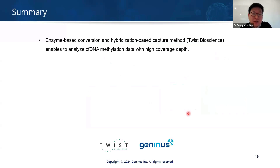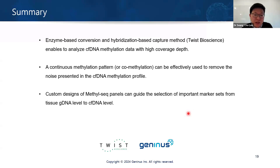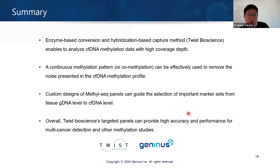Today's summary: enzyme-based conversion and hybridization-based capture methods enable analysis of cell-free DNA methylation data with high coverage depth. Co-methylation patterns can effectively remove noise present in cell-free DNA methylation profiles. Custom designs of methylation-seq panels can guide selection of important marker sets from tissue genomic DNA to the cell-free DNA level. Smaller panels are advantageous when you want high coverage from cell-free DNA methylation. Overall, Twist-based targeted panels can provide high accuracy and performance for multi-cancer detection in methylation studies. Thank you.